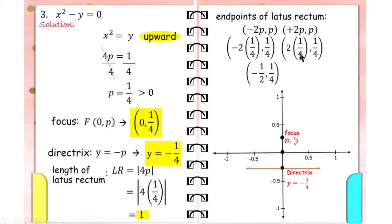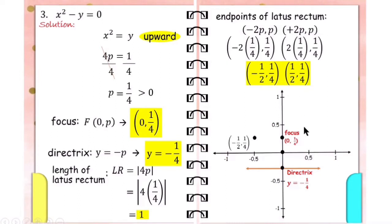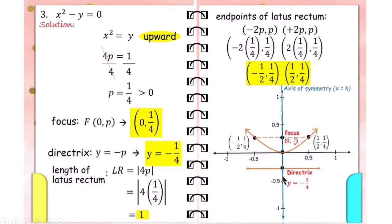Positive 2 times 1/4 is positive 1/2, then copy 1/4. We can now plot these points on the Cartesian plane. 1/2 is 0.5 in decimal and 1/4 is 0.25. So negative 0.5 and 0.25 is located here, and positive 0.5 and 0.25 is located here. Connect these points and we now have our parabola opening upward. The length of the latus rectum is 0.5 plus 0.5 equals 1, and the axis of symmetry is x equals 0, along the y-axis.